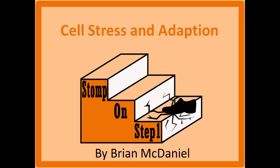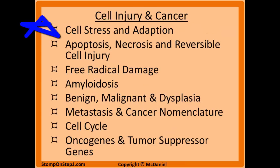Distinguished future physicians, welcome to Stomp On Step 1, the only free video series that helps you study more efficiently by focusing on the highest yield material. In this video we're going to be covering different types of cellular stress and adaptation, like hyperplasia and hypertrophy. This is the first of eight videos in the cell injury and cancer section, so I hope you check out the rest of these when you're done with this one.